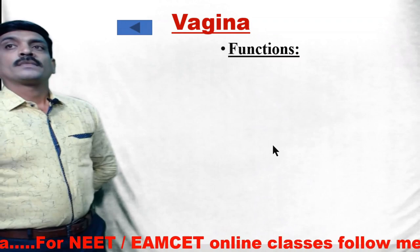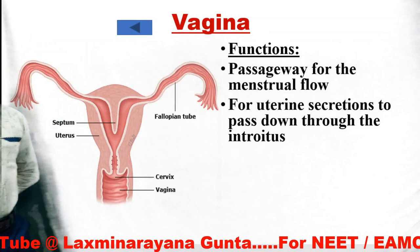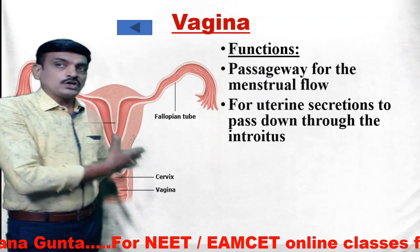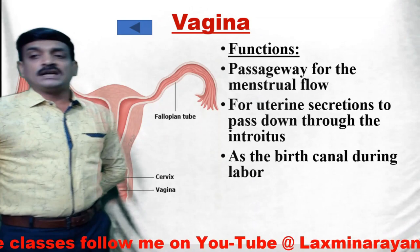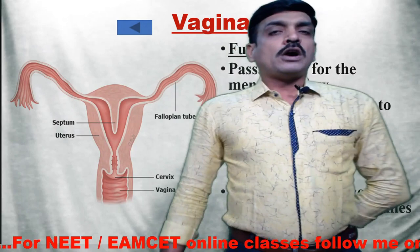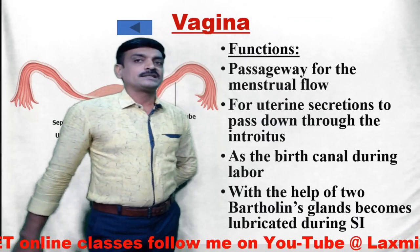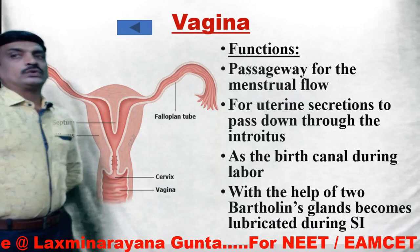The functions of the vagina include: it acts as a passage for menstrual flow and uterine secretions to pass down to the introitus, and it also acts as a birth canal during labor — formed by the cervical canal and the vagina together. With the help of two Bartholin glands, also called greater vestibular glands, the vagina becomes lubricated during sexual intercourse.